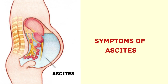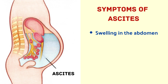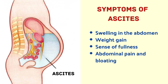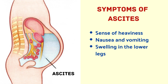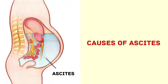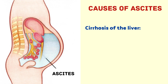Now let us see the symptoms of ascites. They are: swelling in the abdomen, weight gain, sense of fullness, abdominal pain and bloating, back pain, constipation, sense of heaviness, nausea and vomiting, swelling in the lower legs, shortness of breath, fever, and hemorrhoids.